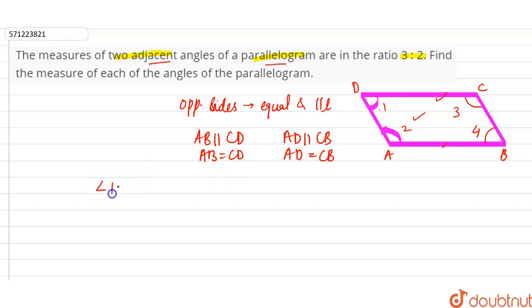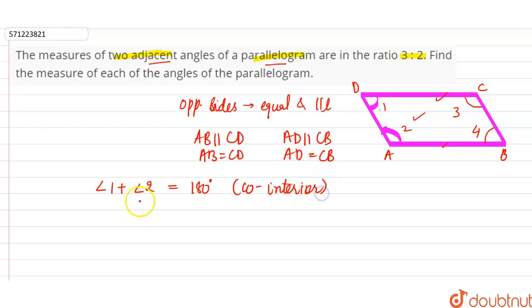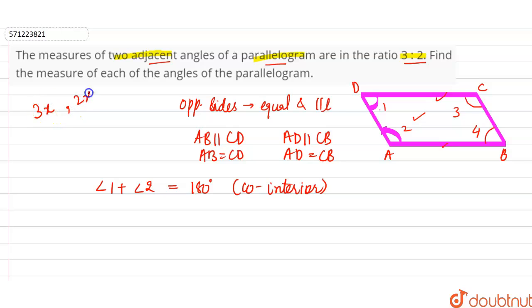So we can say that angle 1 plus angle 2 will be equal to 180 degrees, by the reason of co-interior angles. It is given that the measures of the two adjacent angles are in the ratio 3:2, so we can say the angles are 3x and 2x.